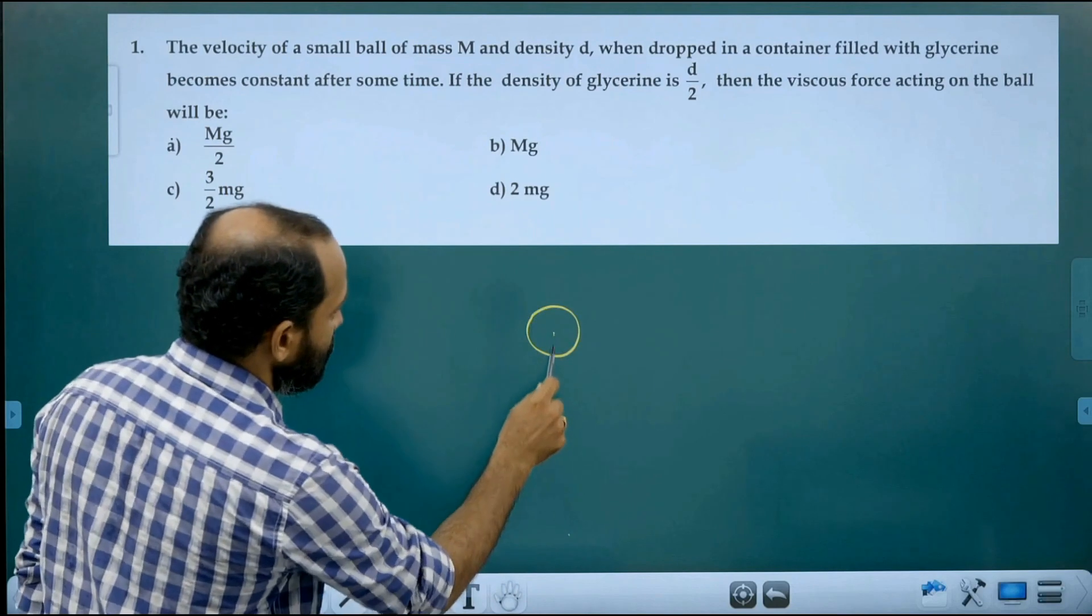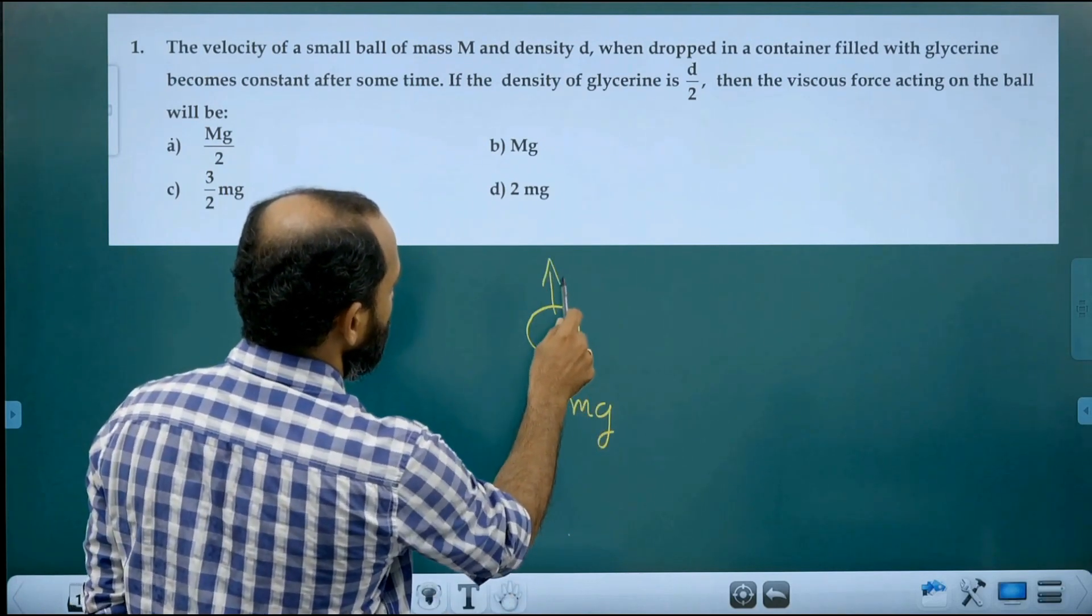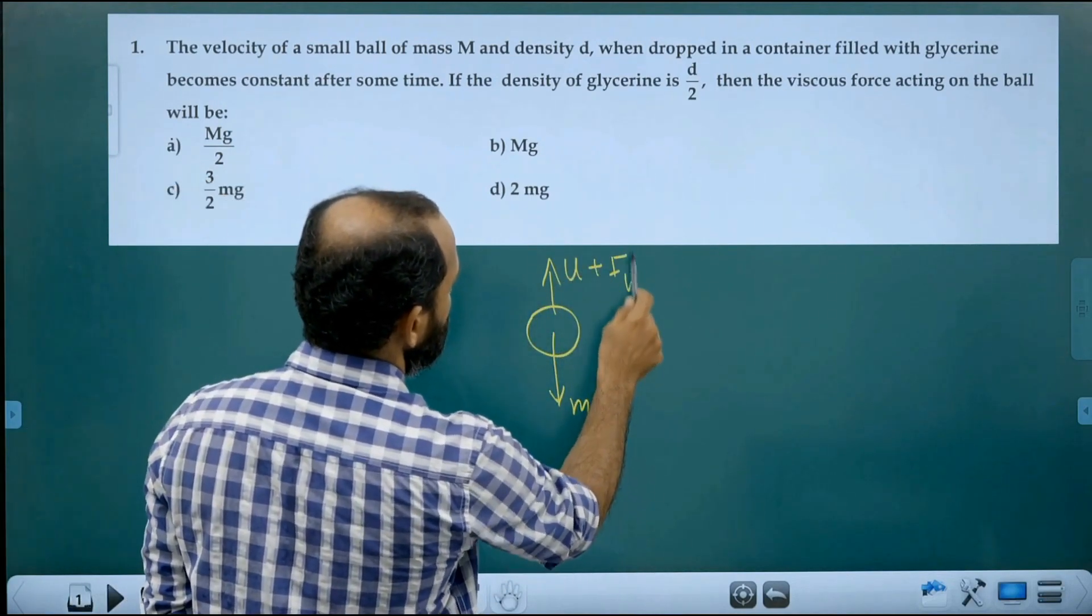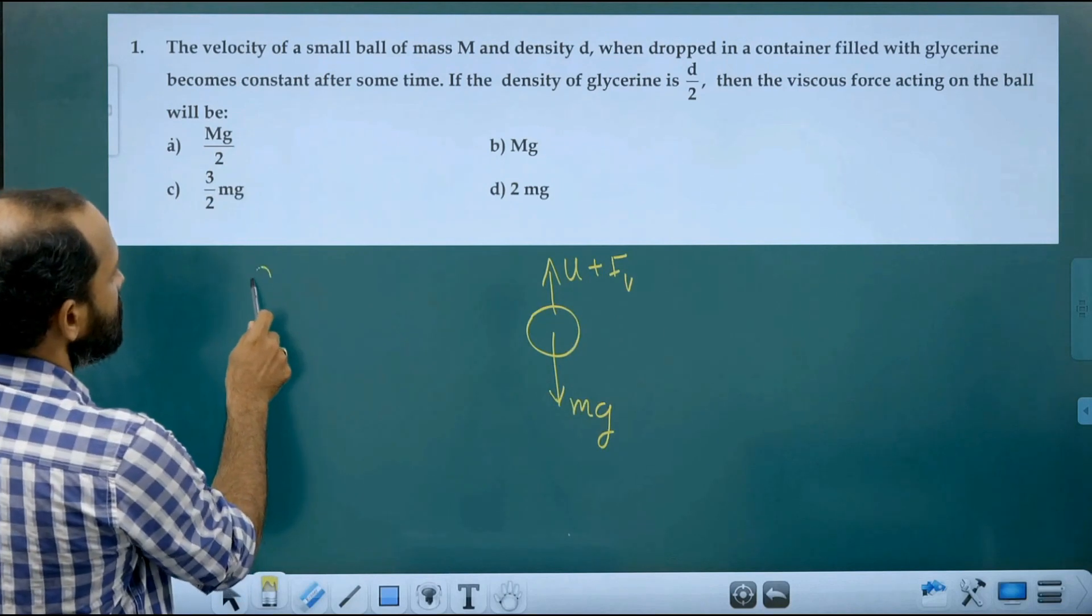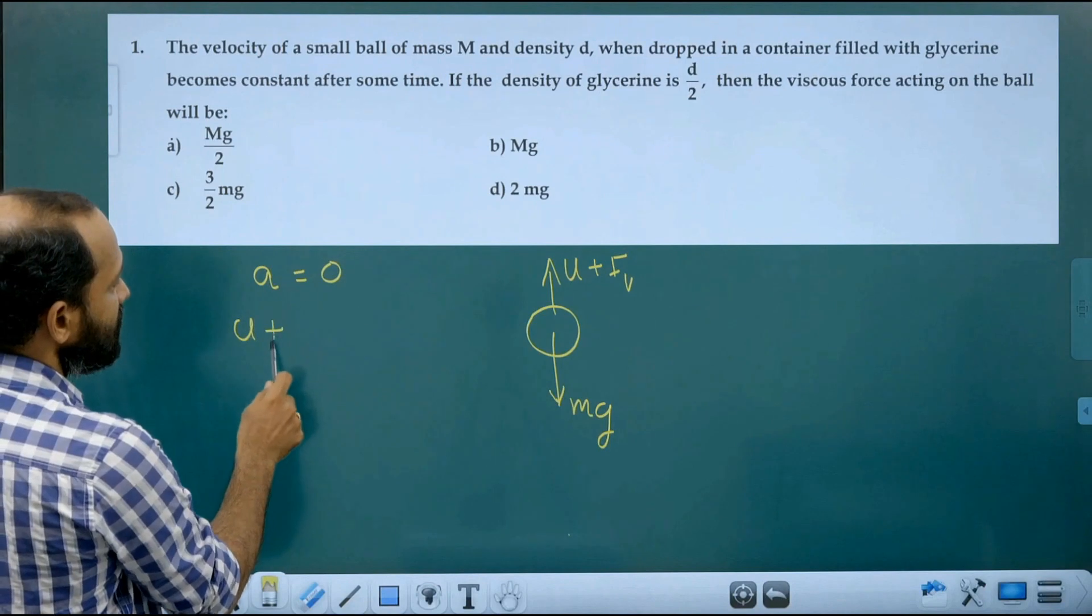The ball is acted upon by its weight, buoyant force, upthrust, then viscous force Fv. As velocity is constant, that means acceleration is zero. That means for balancing of forces